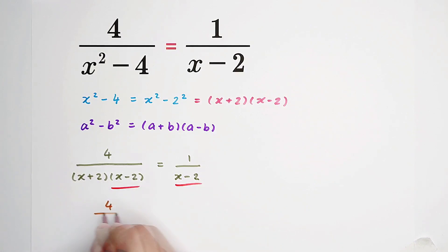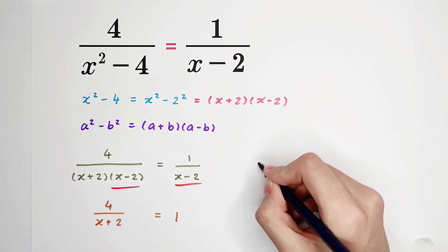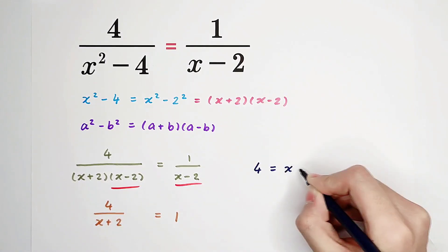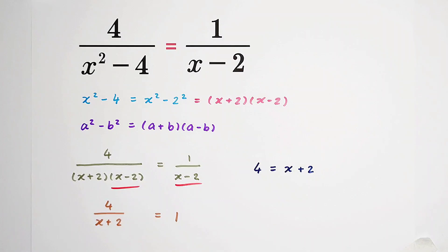And we can get 4 over x plus 2 equals 1. So what can we get then? Multiply x plus 2 on both sides, we can get 4 equals x plus 2. Subtract 2 from both sides, we get 2 is equal to x.